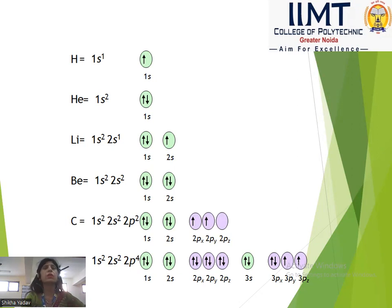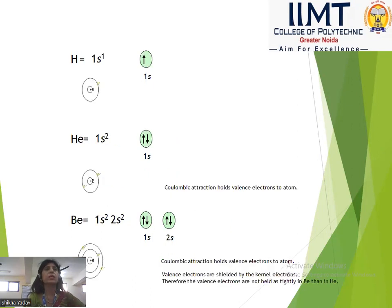Oxygen's configuration is 1s², 2s², 2p⁴. Then we have 1s², 2s², 2p⁶, followed by 3s² and 3p⁶. Here is the orbital diagram showing these configurations.